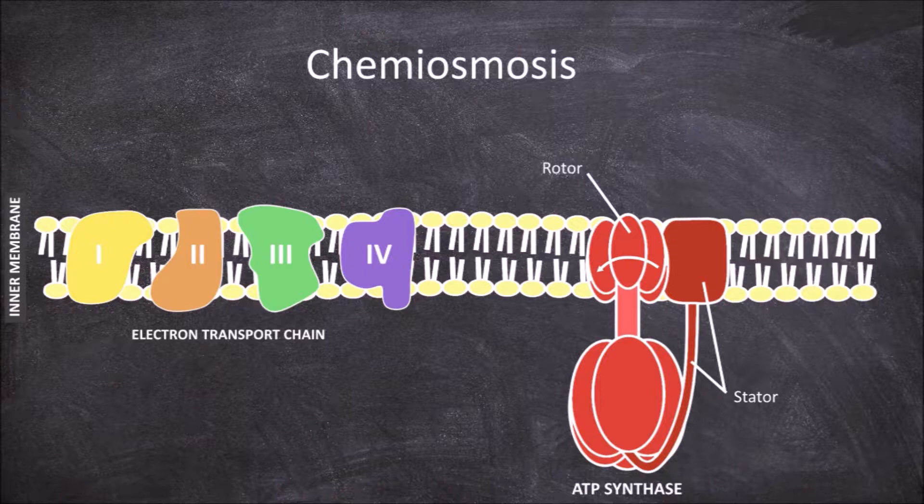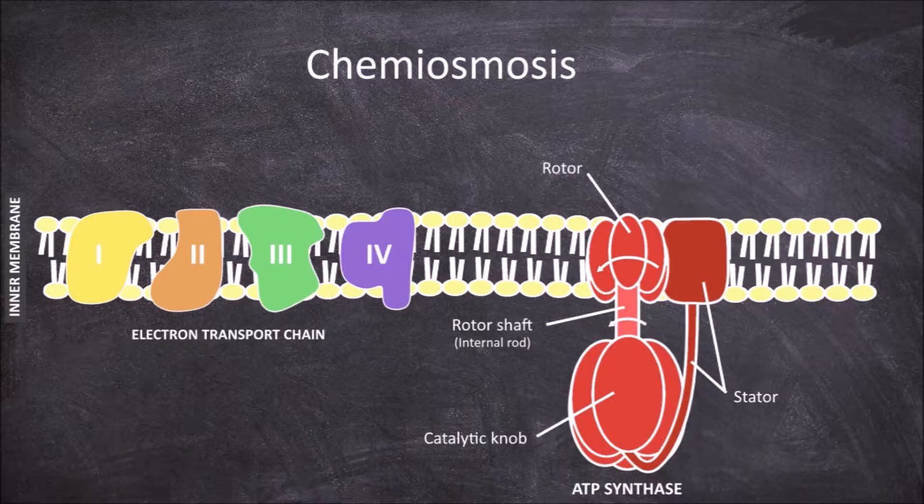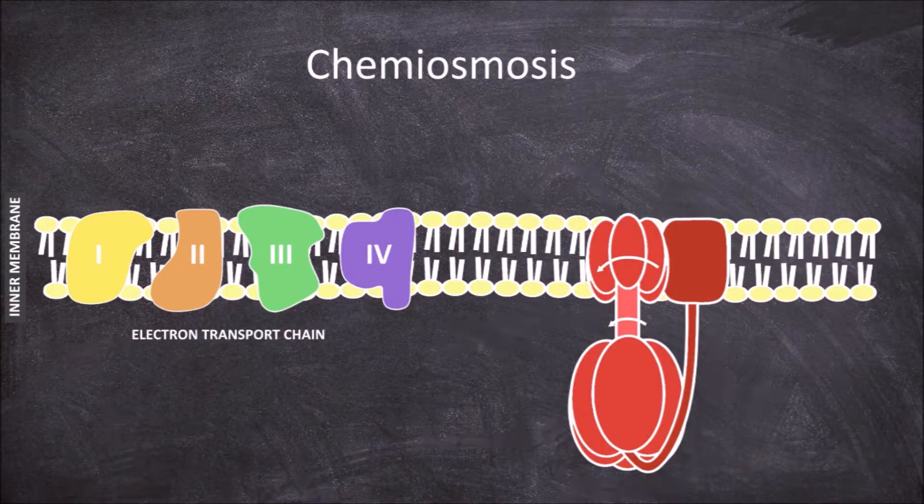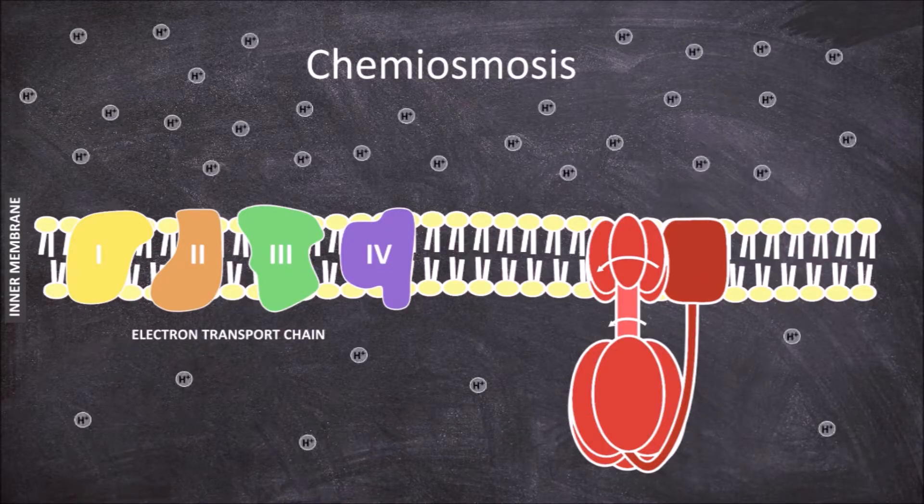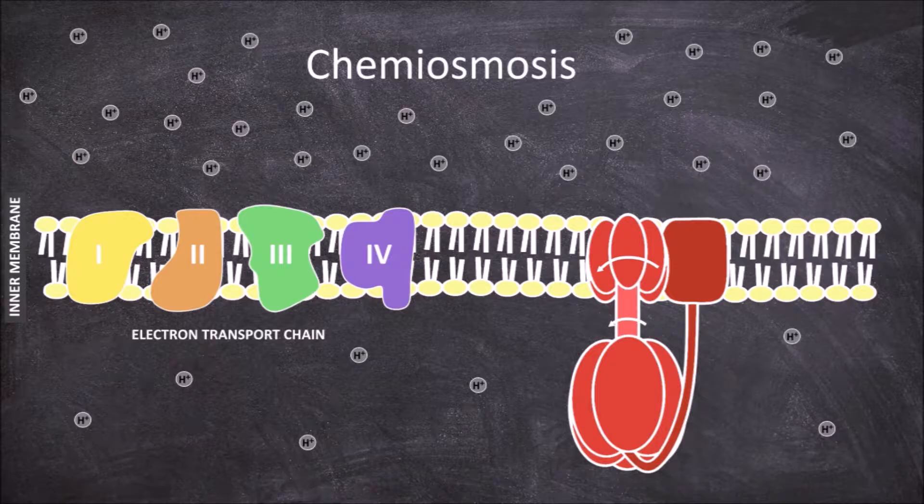ATP synthase also has a F1 subunit composed of the internal rod that also rotates and the catalytic knobs. At the end of the electron transport chain we were left with the hydrogen concentration gradient, with a higher gradient in the intermembrane space compared to the mitochondria matrix.